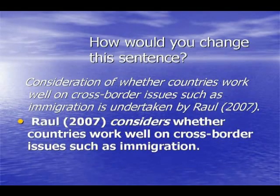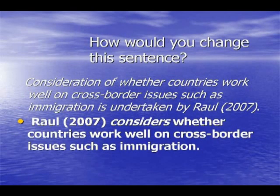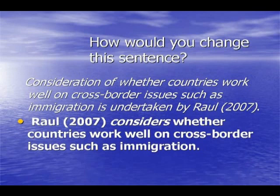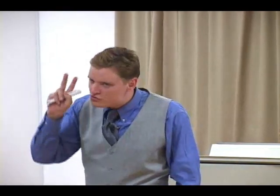'Consideration of whether countries work well on cross-border issues such as immigration is undertaken by Raul.' Who is my subject? Raul. Raul is doing the action — I know because of the word 'by.' The active version: 'Raul considers whether countries work well on cross-border issues such as immigration.' More direct and shorter.